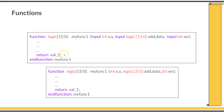SystemVerilog supports returning a value without an explicit return statement, but it is not recommended. Since the default direction is 'input', you can simplify the argument list by omitting the 'input' keyword and rewrite it as: 'my_function x, y, logic [15:0] ADDR, data, bit wr'.